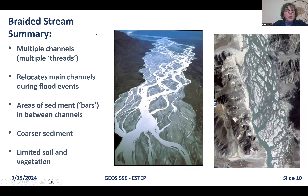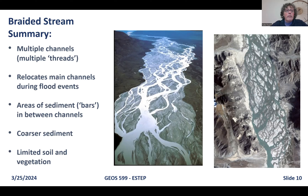Summary of braided streams: they are associated with multiple channels or threads that typically relocate during flood events. There are areas of sediment called bars between the channels, and they are typically associated with coarser sediment and limited soil and vegetation.